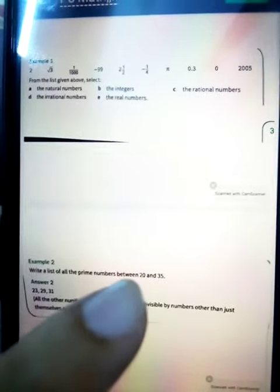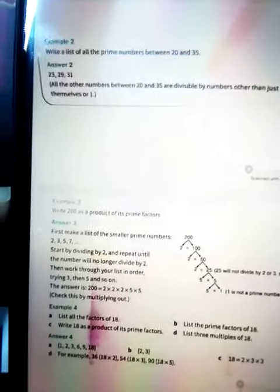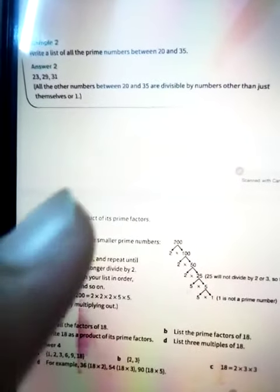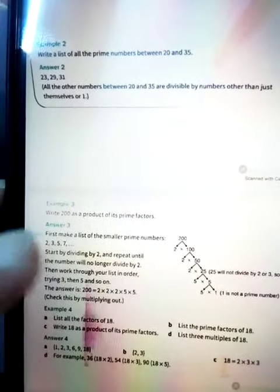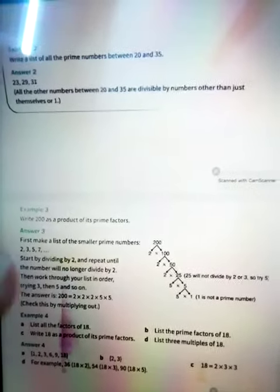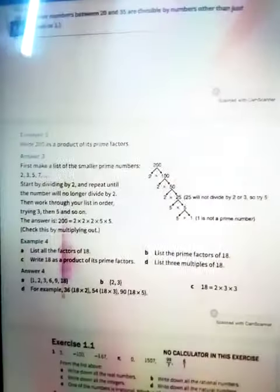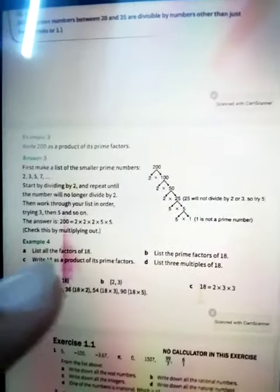In example number three, write 200 as a product of its prime number. You have to think about a prime number whose product is 200. And now example number four: list all the prime numbers.